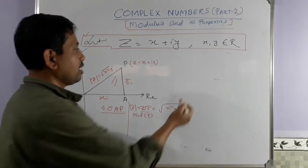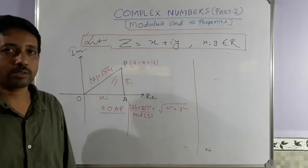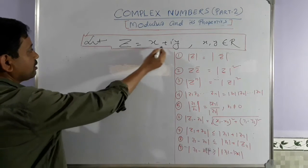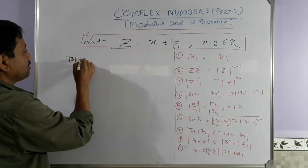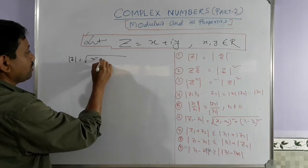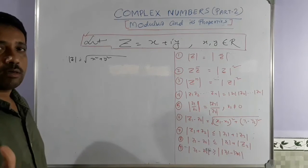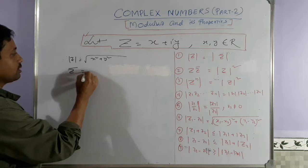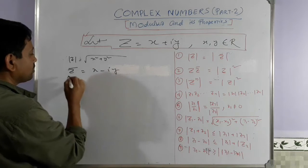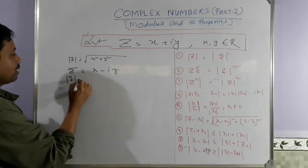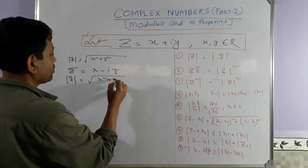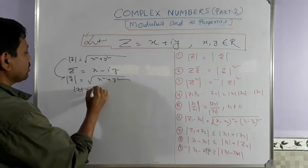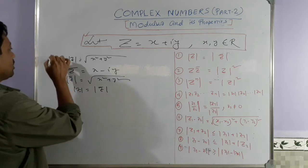We will now learn about some properties related to modulus. For z = x + iy, we have |z| = √(x² + y²). From our last class discussion on the complex conjugate, z̄ = x - iy. If you find |z̄|, it will also equal √(x² + y²). So we can write |z| = |z̄|. This is property number 1.